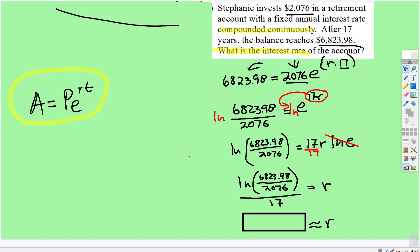And then in your calculator, type ln and it gives you the left parenthesis. So 6823.98 divided by 2076, right parenthesis. That's very important.